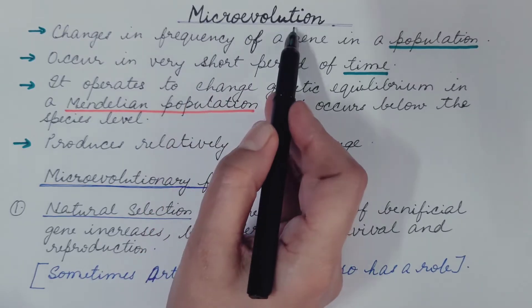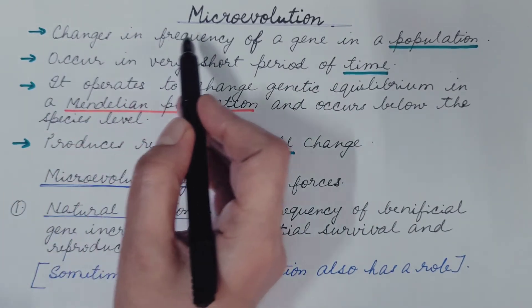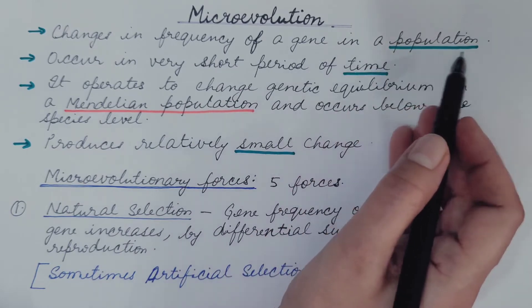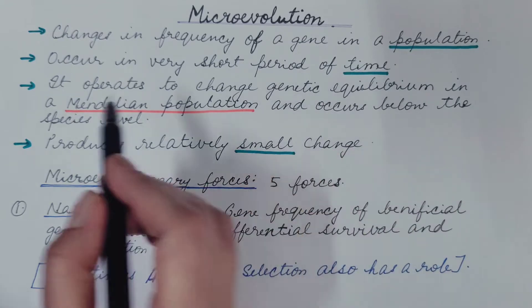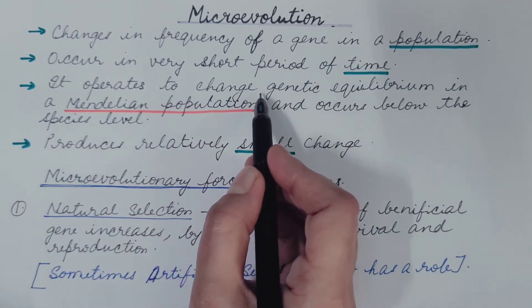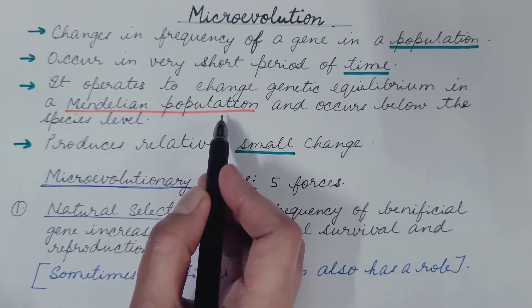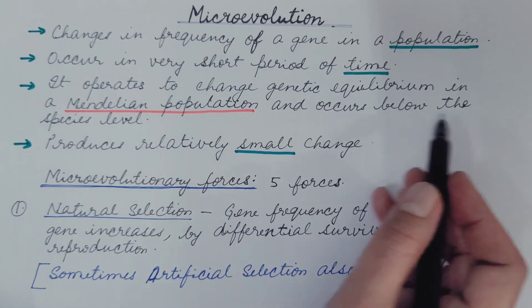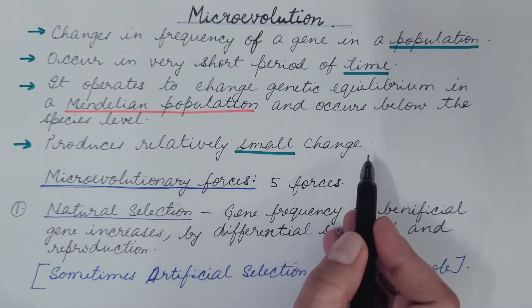We will discuss microevolution. It is defined as the changes in frequency of a gene in a population. It occurs in very short period of time. It operates to change genetic equilibrium in a Mendelian population and occurs below the species level. It produces relatively small change.